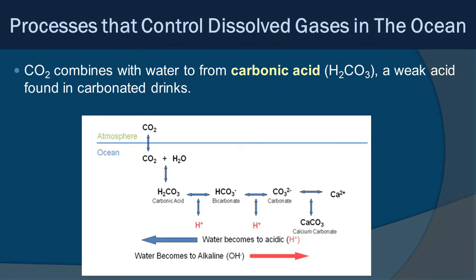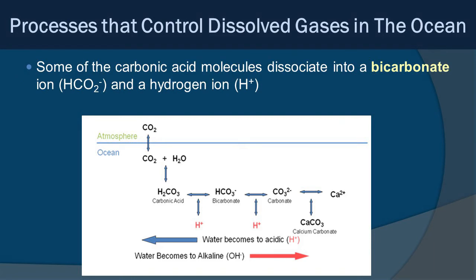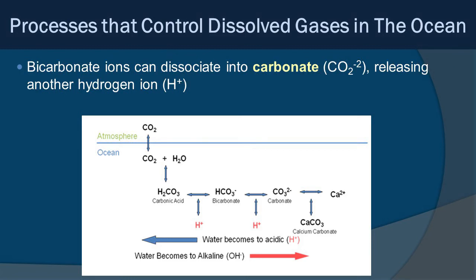Here's the process: carbon dioxide from the atmosphere diffuses into the water and combines with water to form carbonic acid, a weak acid found in carbonated drinks. Some carbonic acid molecules disassociate into bicarbonate, releasing a hydrogen ion — this can make the water more acidic. Bicarbonate ions can then disassociate further into a carbonate ion, releasing another hydrogen ion, making the water even more acidic.